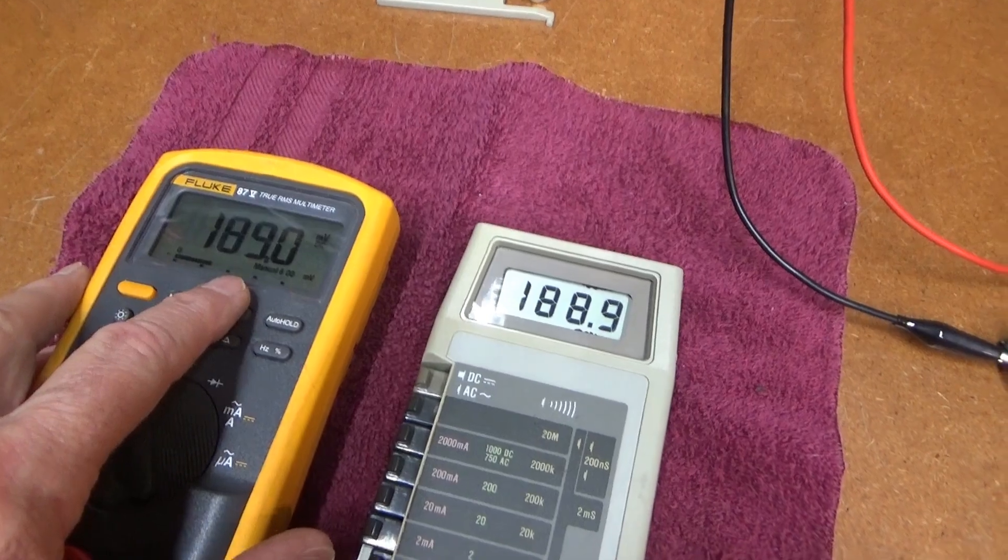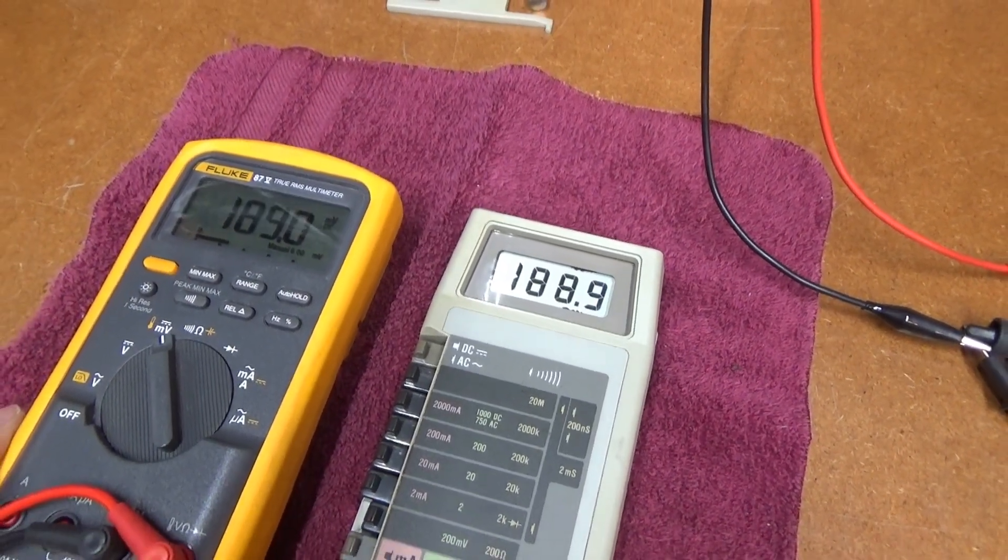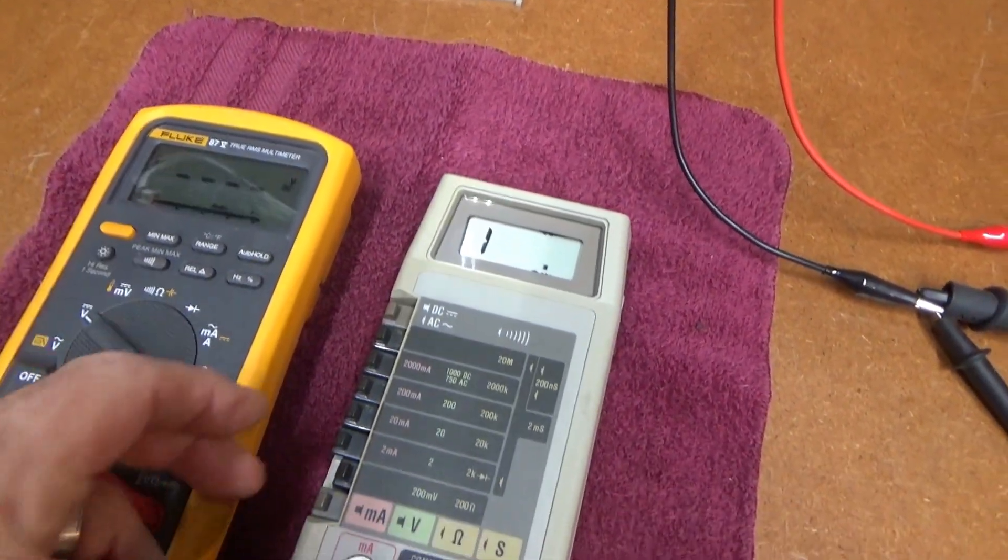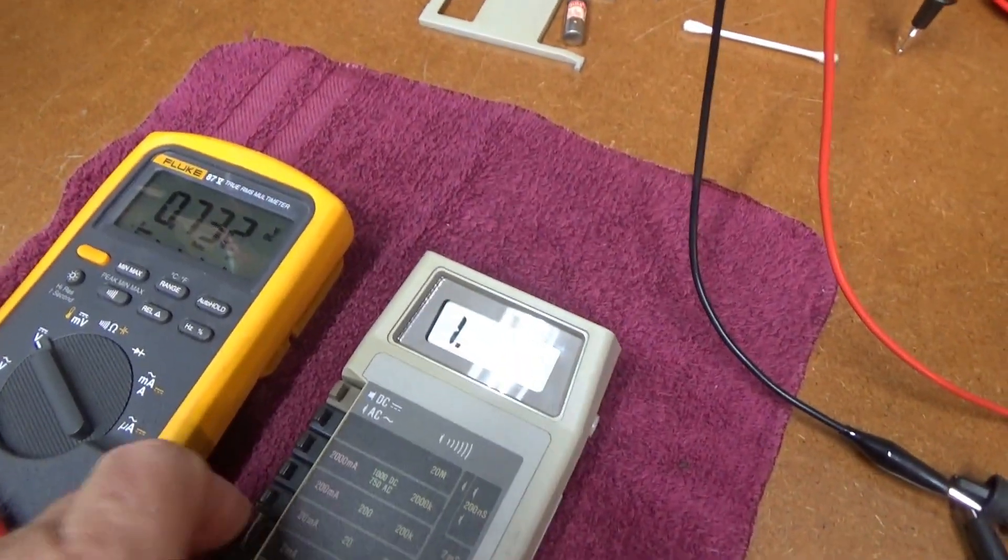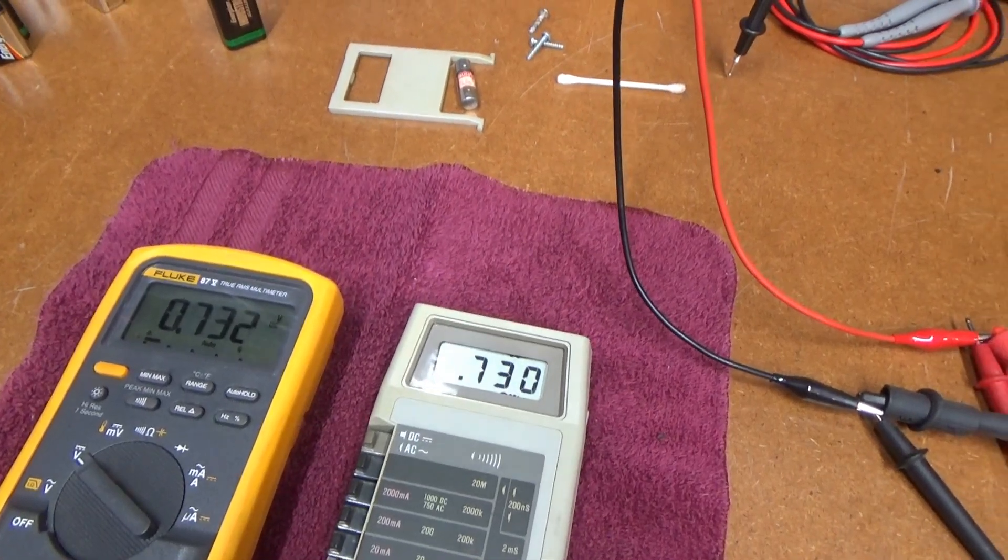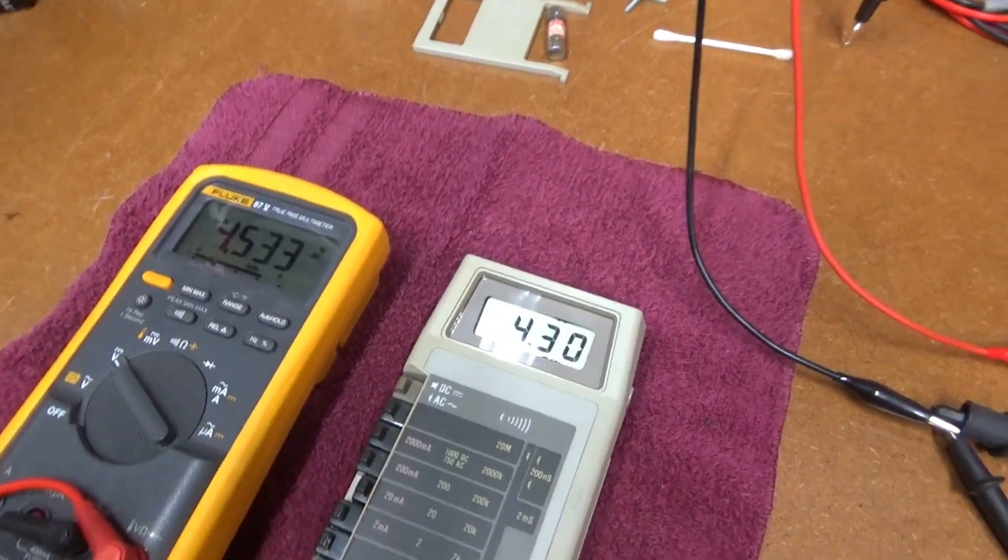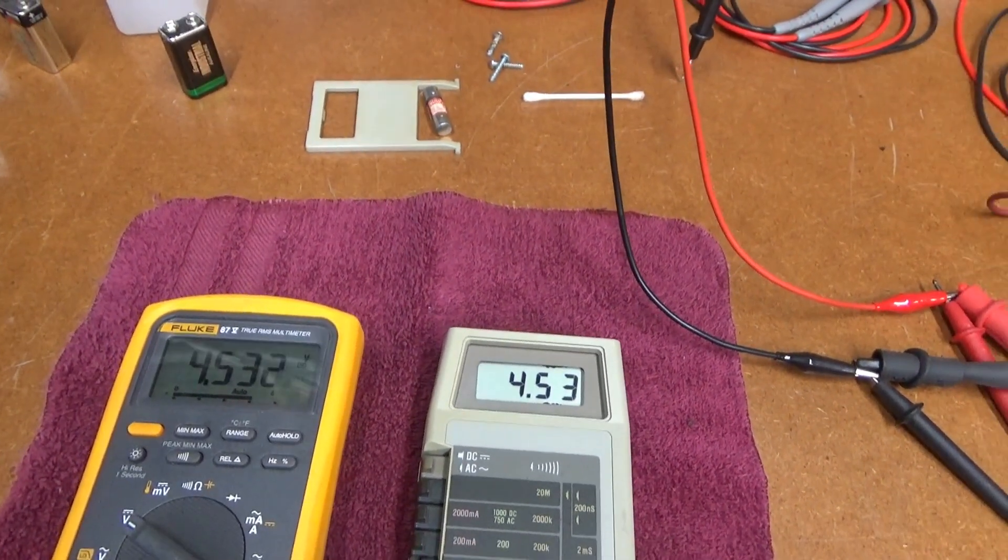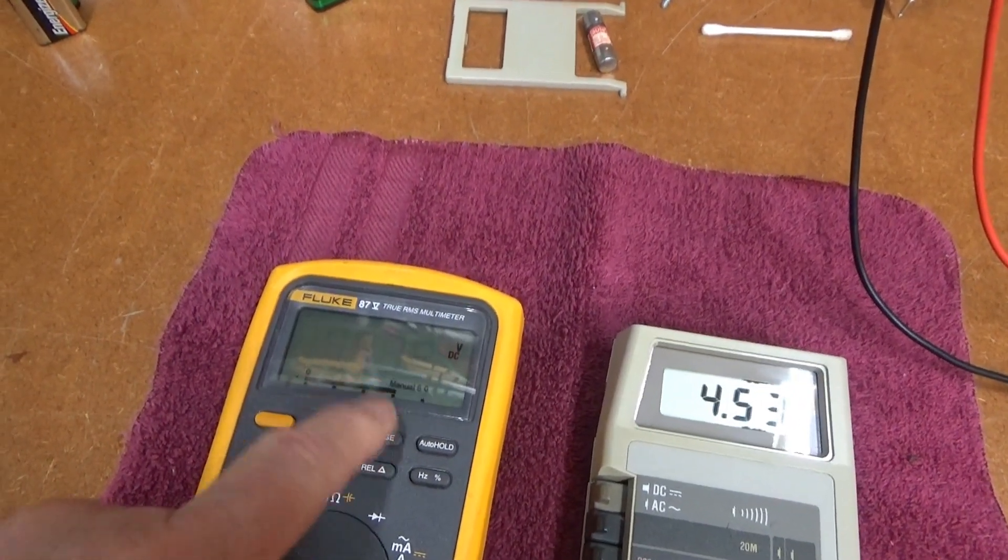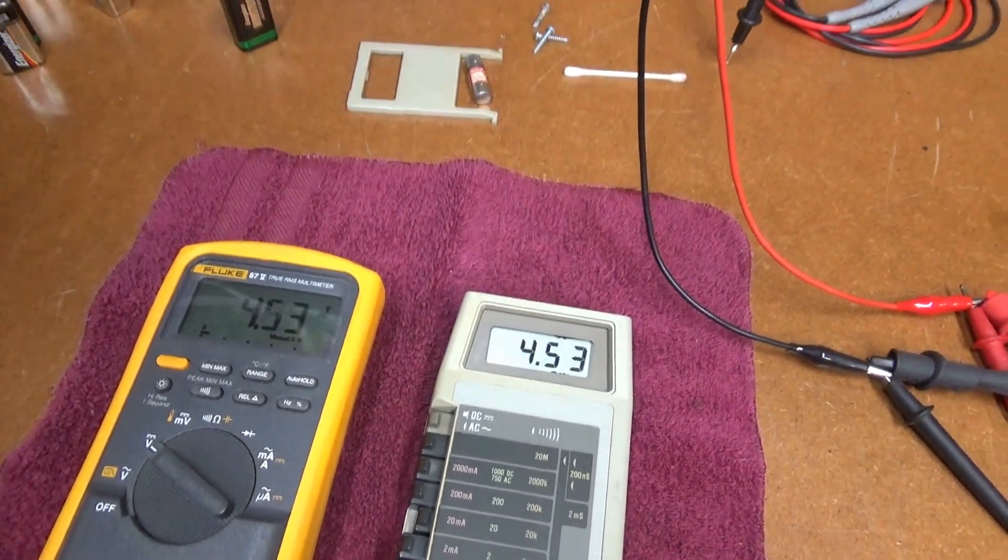Maybe one least significant digit off. That's in millivolts, let's go up a little bit to volts. 0.732, 0.730. Let's go up here a little bit. Four and a half volts, 4.53 and 4.53. Let me change the range, see if that matches. That's the same.